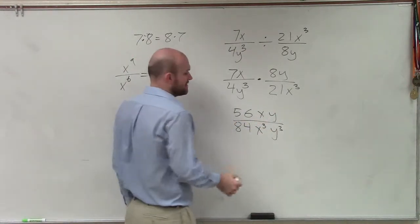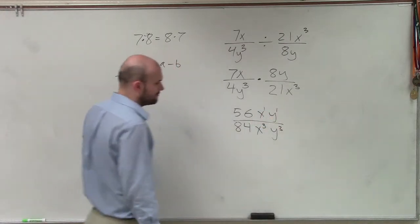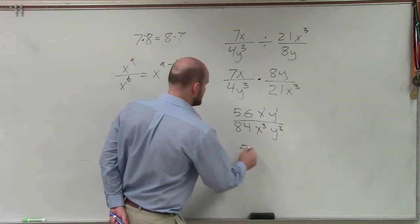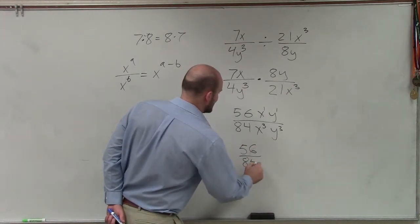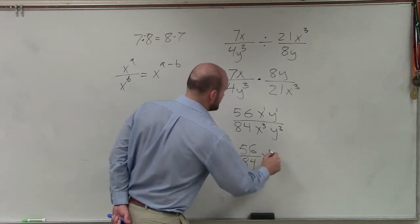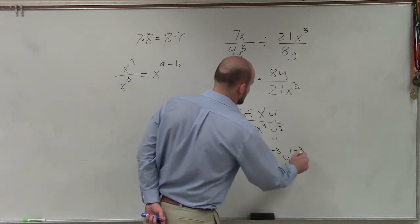So really, this can be rewritten as 56 over 84 times x to the 1 minus 3 and y to the 1 minus 3.